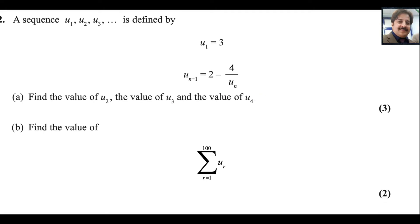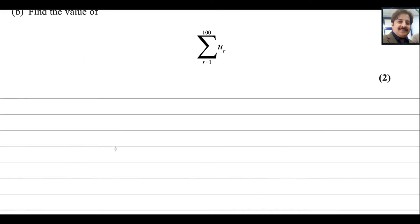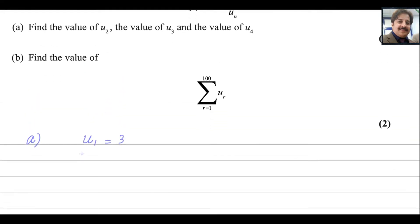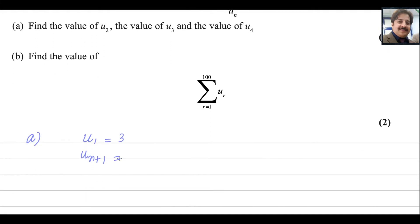Question number 1, first part. We know that U1 is 3. Un+1 equals 2 minus 4 over Un.